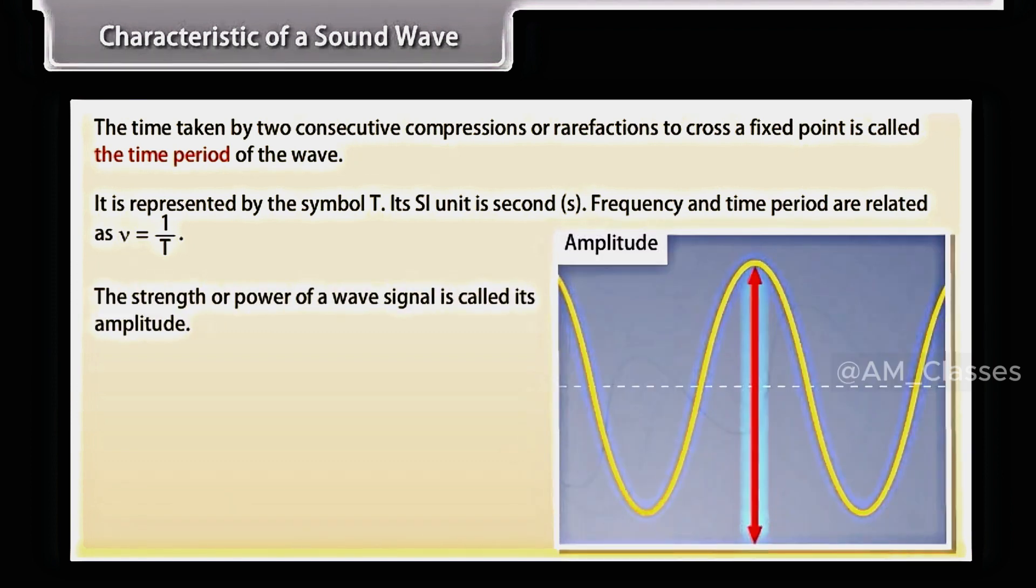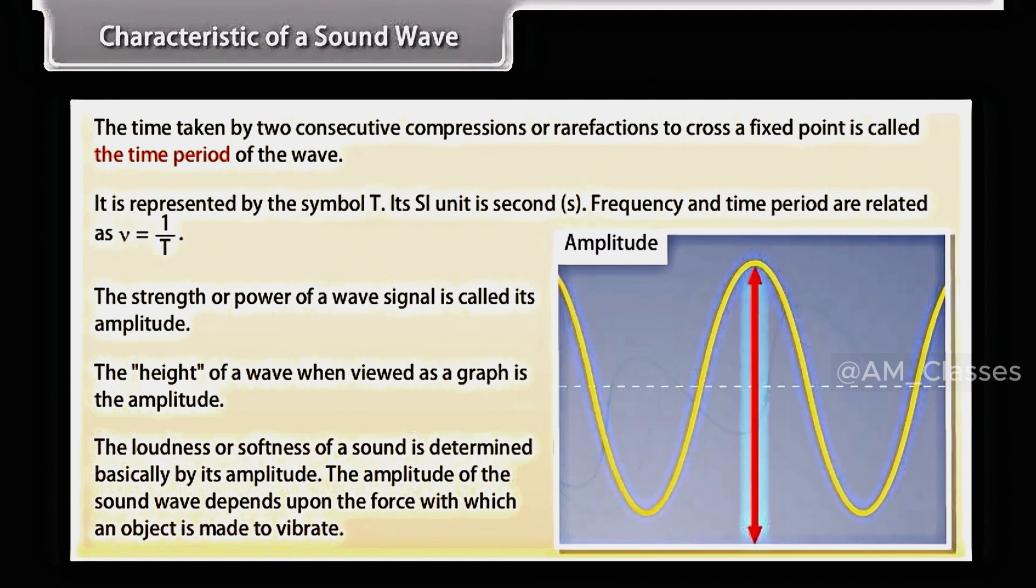The strength or power of a wave signal is called its amplitude. Or, the height of the wave when viewed as a graph is the amplitude. The loudness or softness of a sound is determined basically by its amplitude. The amplitude of the sound wave depends upon the force with which an object is made to vibrate.